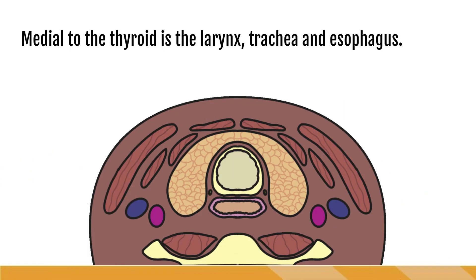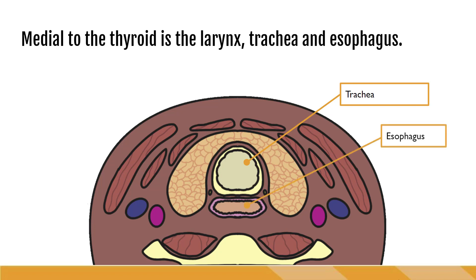Medial to the thyroid is the trachea. The larynx is also medial to the thyroid but not depicted at the inferior level of the neck. The esophagus is also medial to the thyroid but tends to sit a little bit more towards the left and can be easily seen when imaging the left lobe of the thyroid, and is also commonly mistaken for a medial mass.